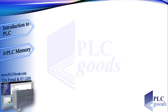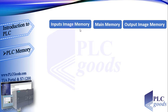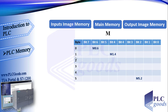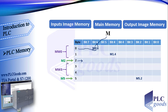A CPU has 3 important memories which are used frequently: input image memory, main memory, and output image memory. Let's start with the main memory — we use the letter M for this memory. The first column shows the byte number, and in every row we have 8 bits, bit 0 to bit 7. For example, the address M0.6 refers to: M for main memory, the next number for the byte number, and after the dot, the second number for the bit number. Similarly M1.4 and M5.2. If we want to refer to a whole byte, we just write the byte number such as MB2 or MB5. If we need a word, W is inserted between M and the byte number, such as MW0, which consists of bytes 0 and 1, or MW3, which refers to bytes 3 and 4.